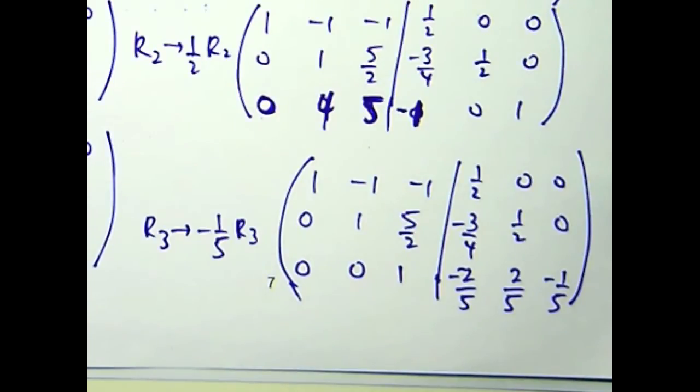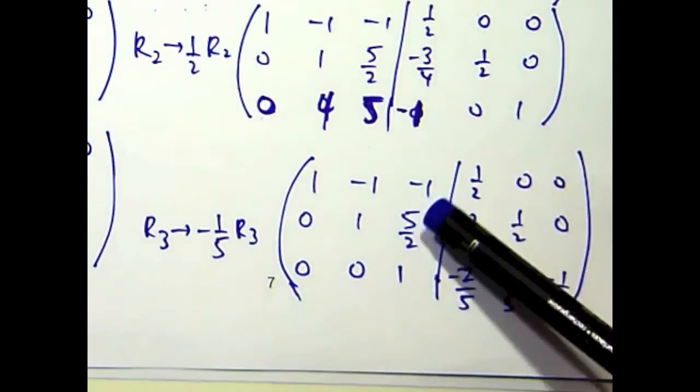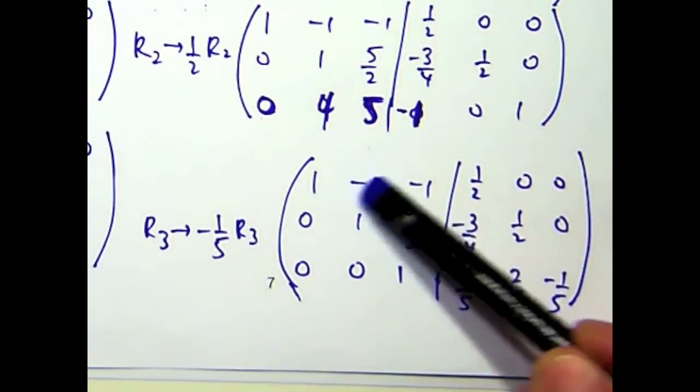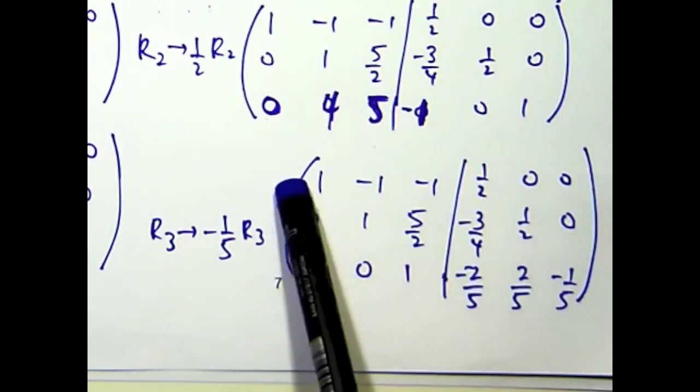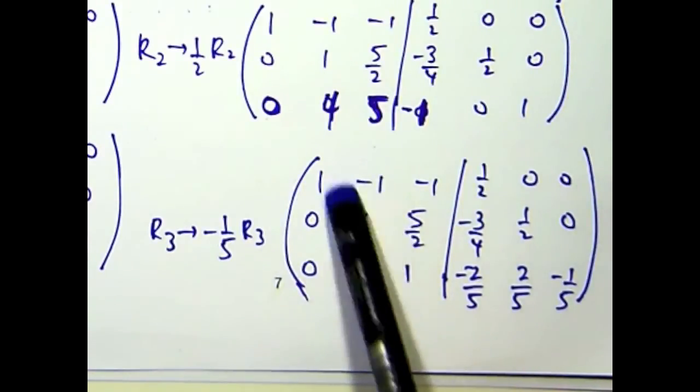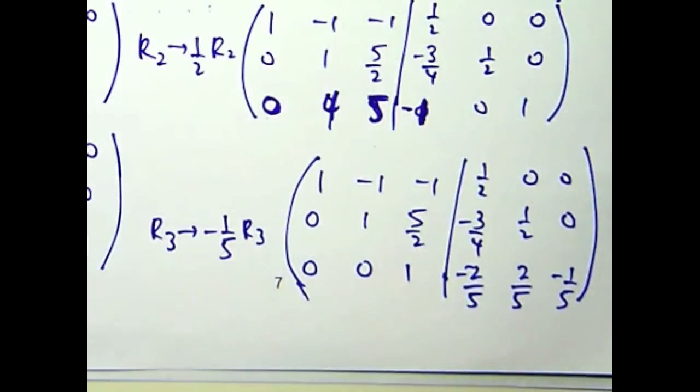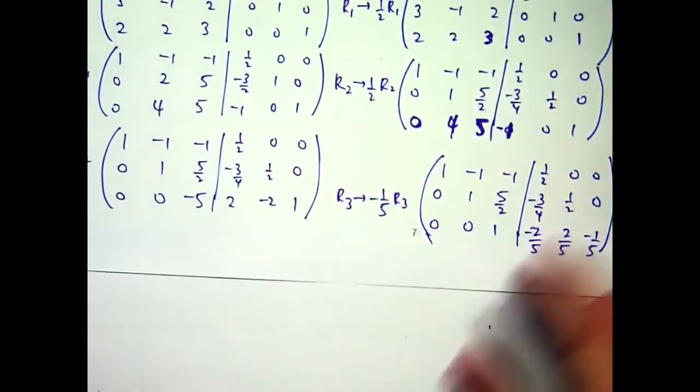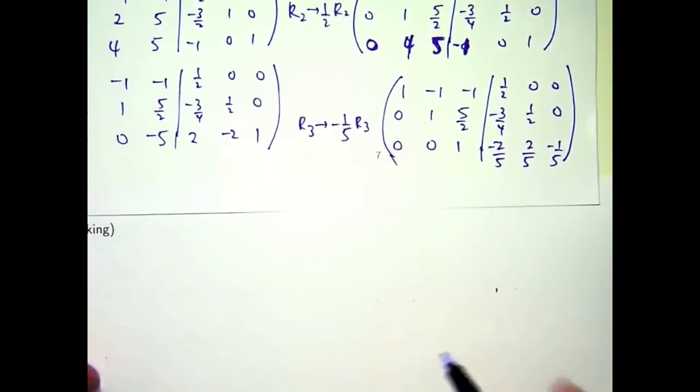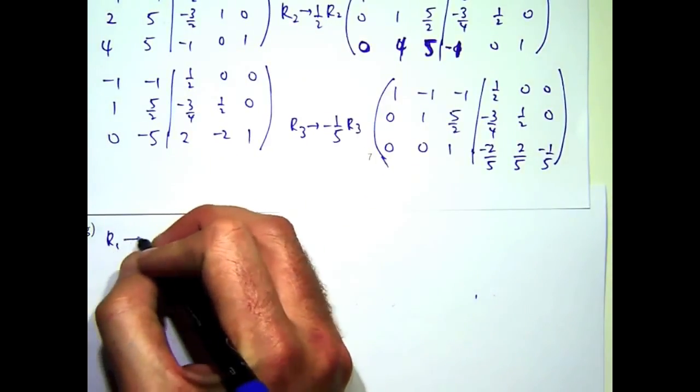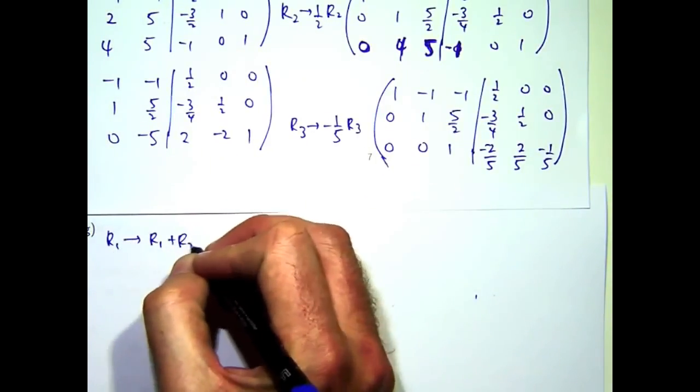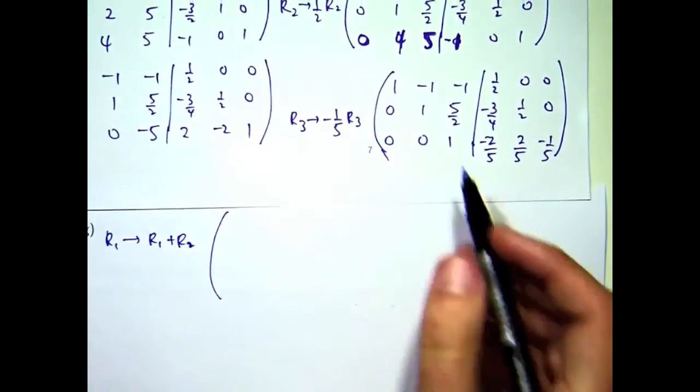What we can do now is just sort of work backwards. Get this to a zero, get this to a zero, and get this to a zero. So how can we do that? Well, there's various ways you can do that, right? So if I add row 2 to row 1, this is going to disappear. So what are we going to get there? We're going to get 1, 0.